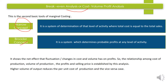Broader concept में break-even analysis और CVP analysis का मतलब है: determine करना probable profits किसी भी level of activity पे। मतलब हम सिर्फ वह level of activity नहीं देखते जहाँ TC equals TS हो — किसी भी level of activity पे जब probable profits determine किये जाएंगे उसको break-even analysis या CVP analysis बोला जाएगा। CVP analysis show करता है the net effect that fluctuation or change in cost and volume has on profit — और selling price में change का effect भी profits पर पड़ता है।